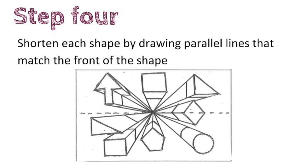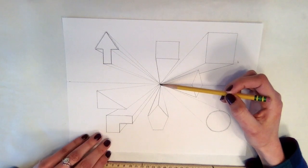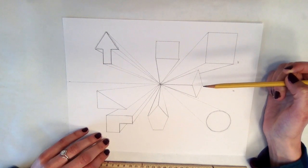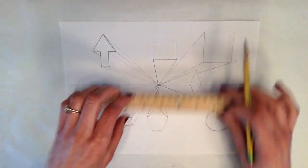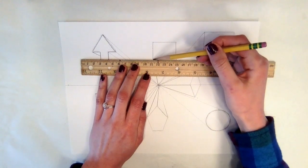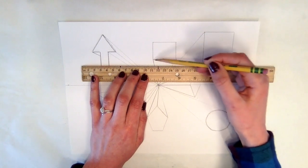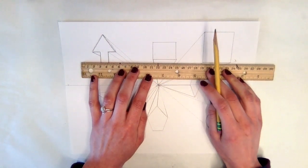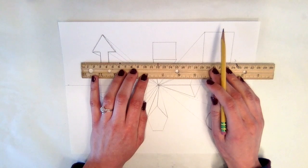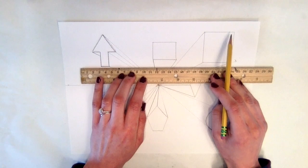Step four is where you will shorten each shape by drawing parallel lines that match the front of the shape. So my drawing here looks a little bit crazy because there's so many lines going to the vanishing point, so I'm going to end up shortening the shapes. I'll start with the square on the top. I'm going to match my ruler up to the side of the shape that I want to shorten, and that would be the section that is between the lines that go to the vanishing point. So I can decide, do I want my square really, really skinny or my rectangle really skinny, or do I want it really long? You can decide how long you want your shape to be.